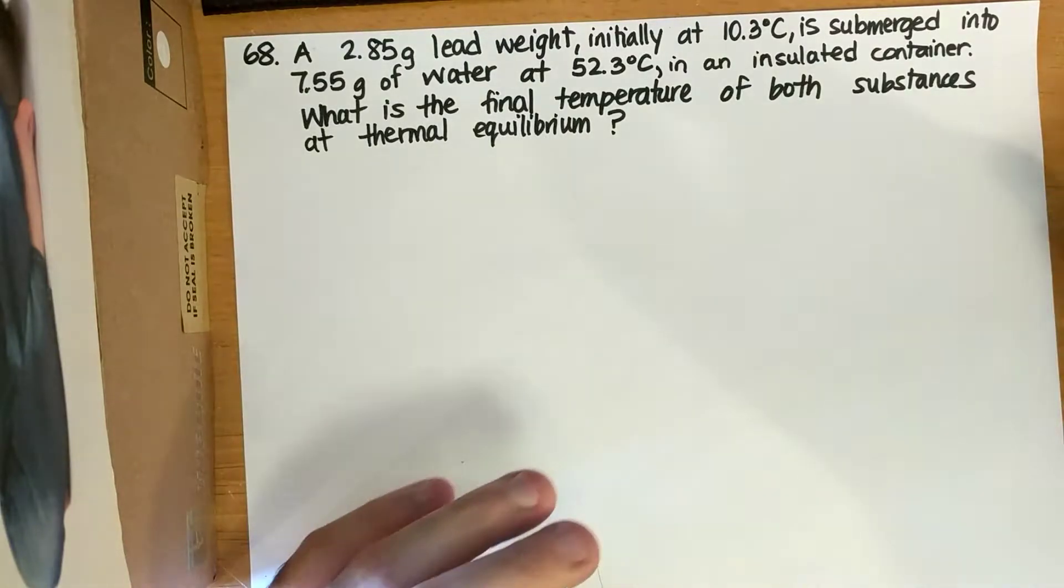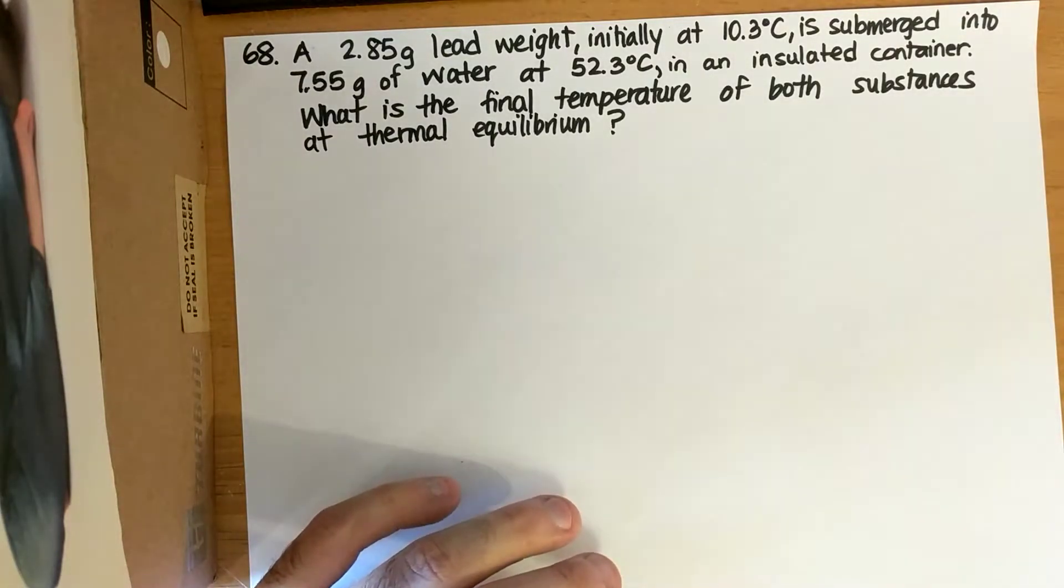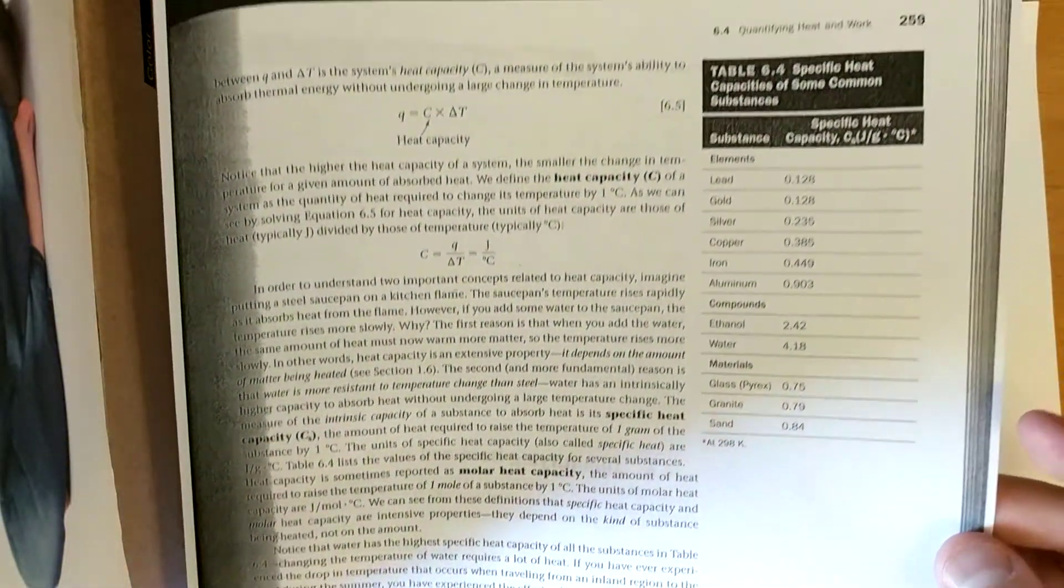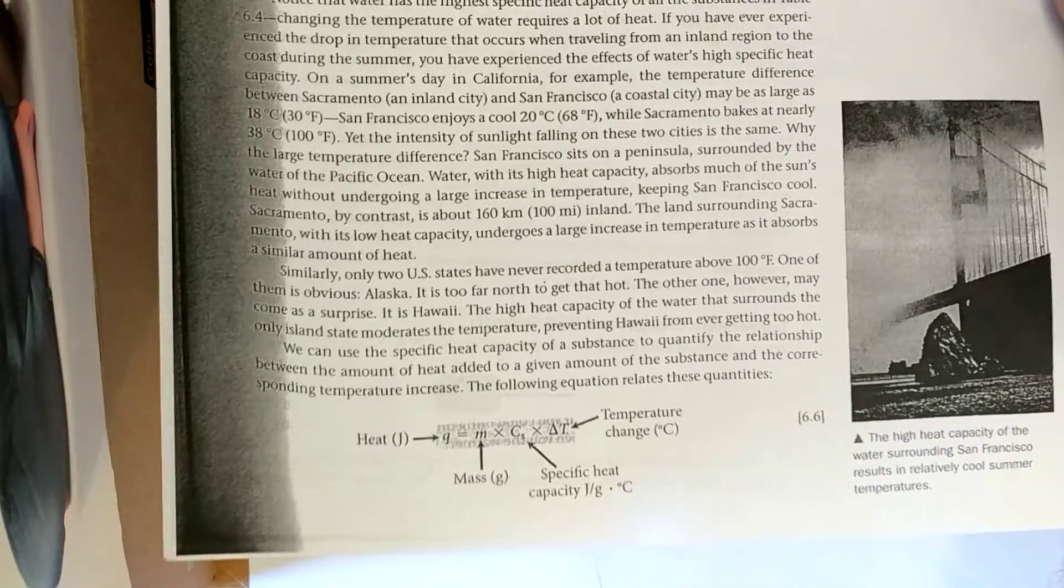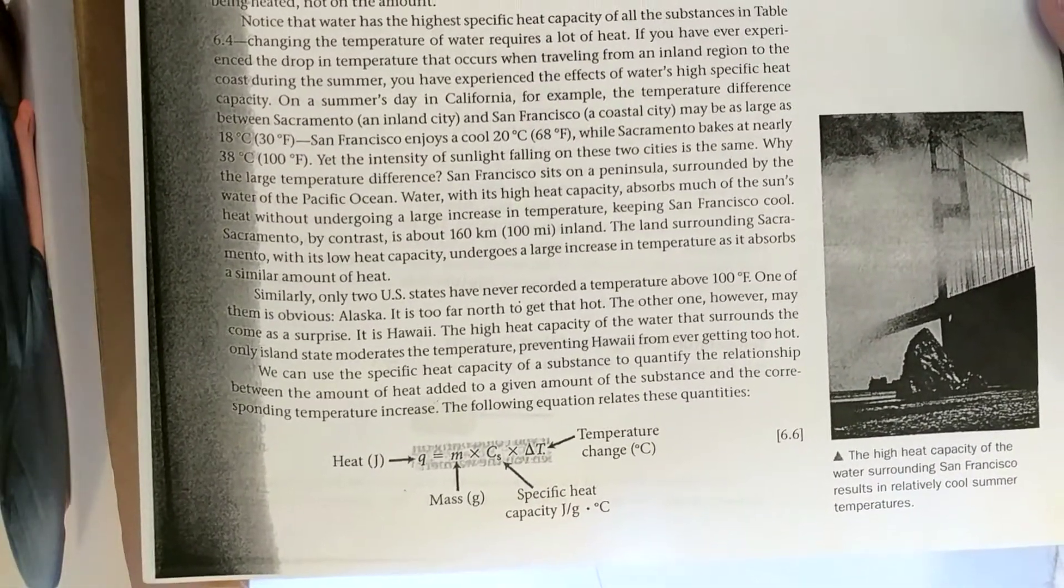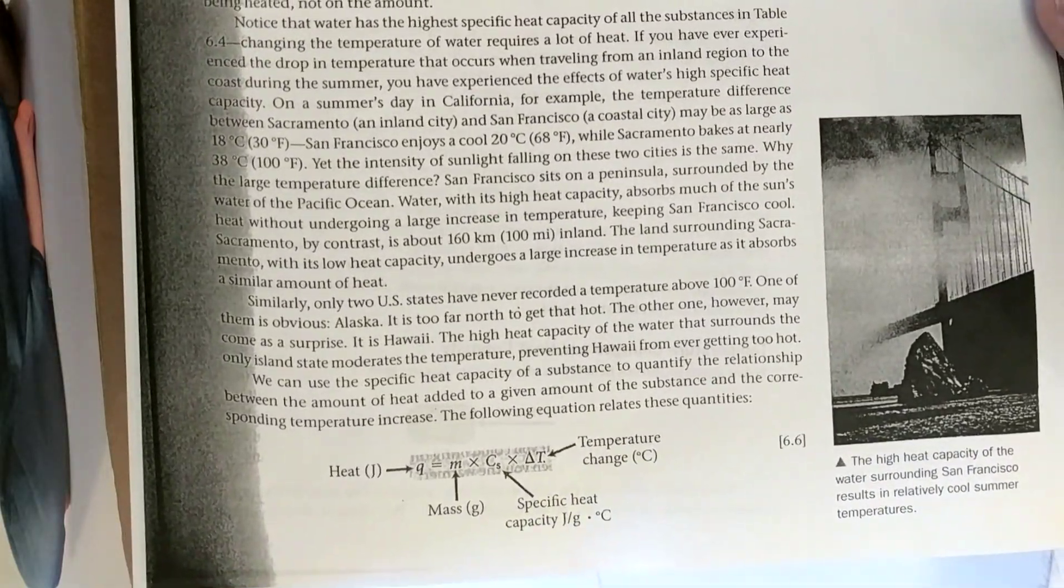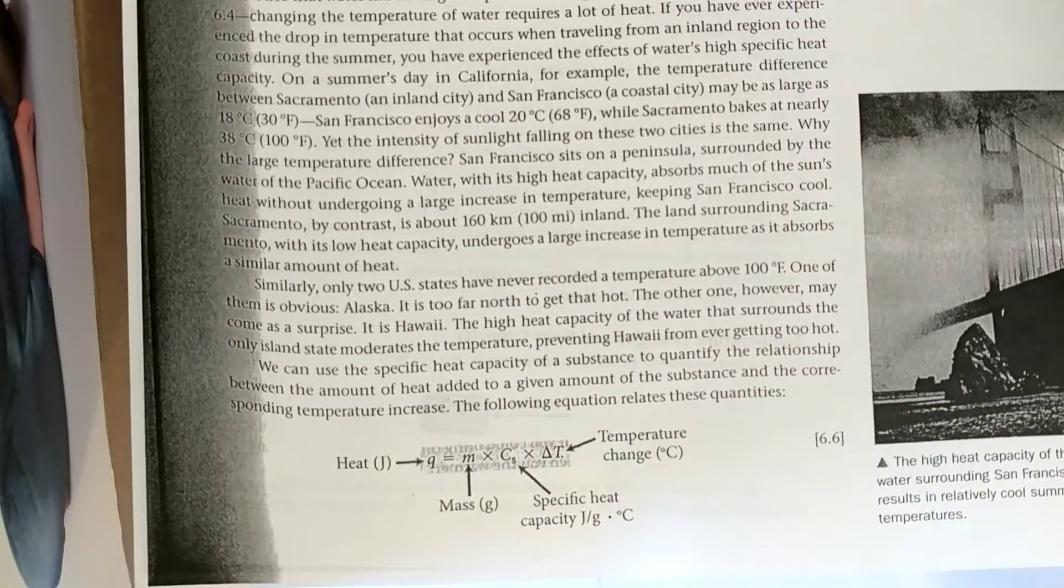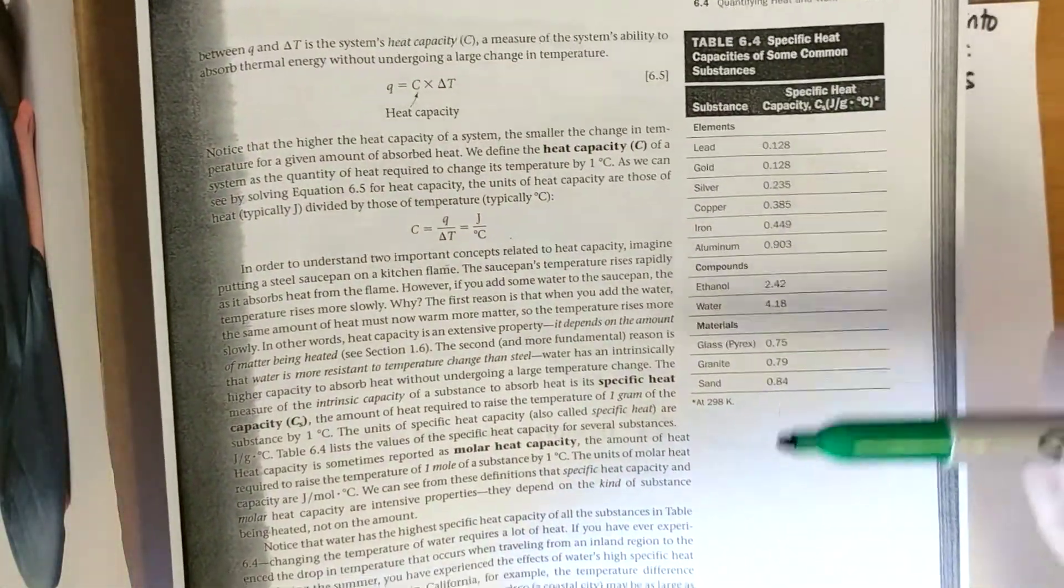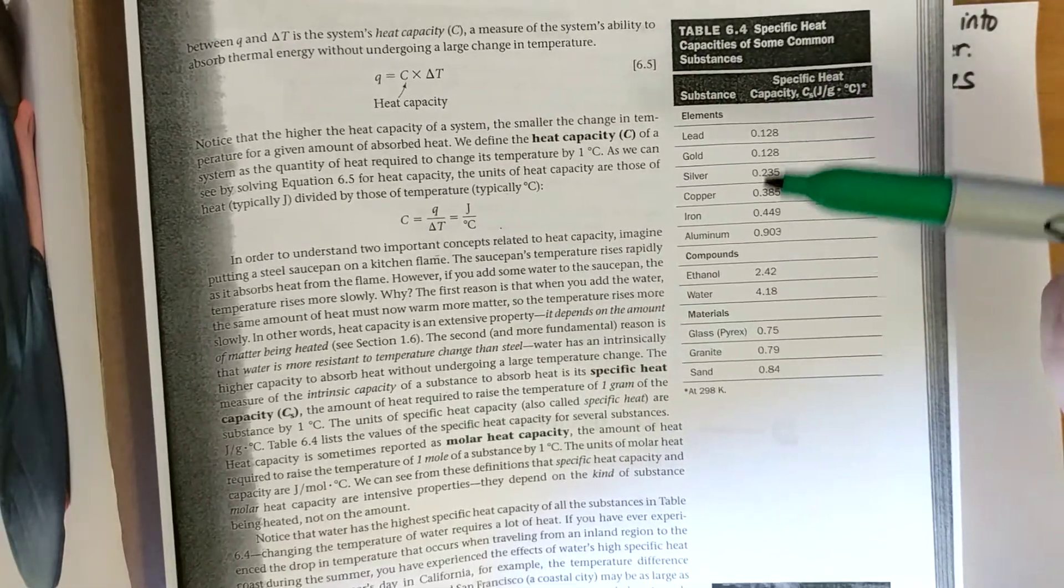So whenever we have two objects that are coming into contact with each other at different temperatures, and we're asking for a change in temperature, we have to think of heat capacity or specific heat capacity. So I'm on page 259 of your chapter 6 textbook, and there is this equation known as Q equals MC delta T. And so Q is the heat involved in any change in temperature. M is the mass of the object whose temperature is changing. C is the specific heat capacity of the object whose temperature is changing. And delta T is how the temperature changed. And delta T is T final minus T initial.